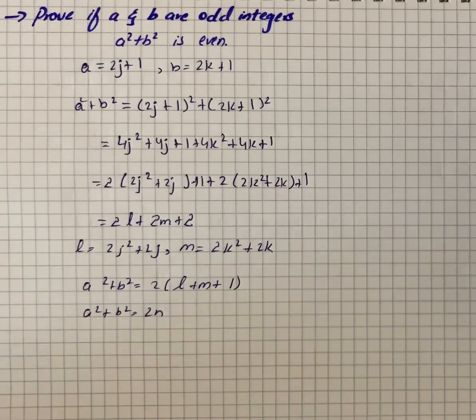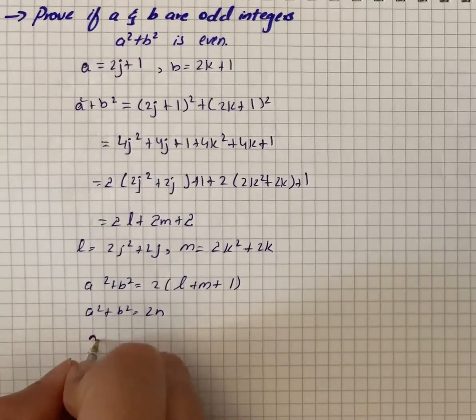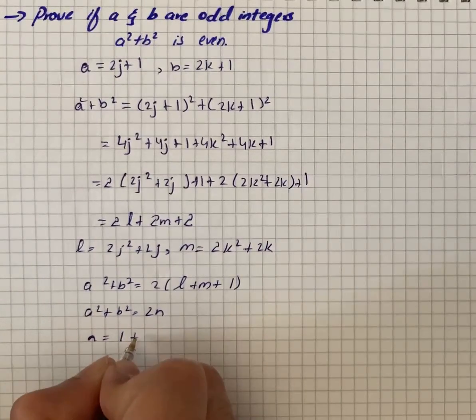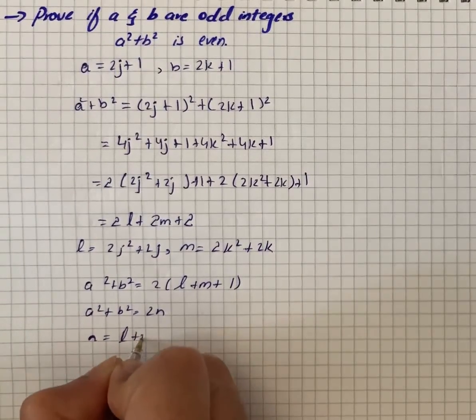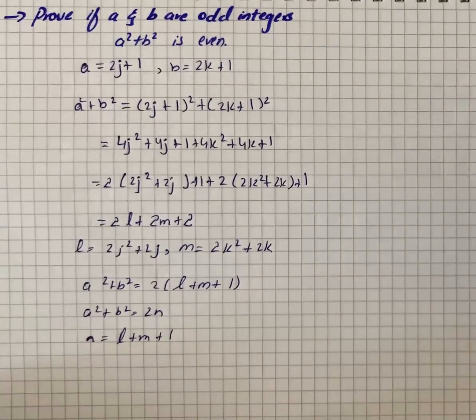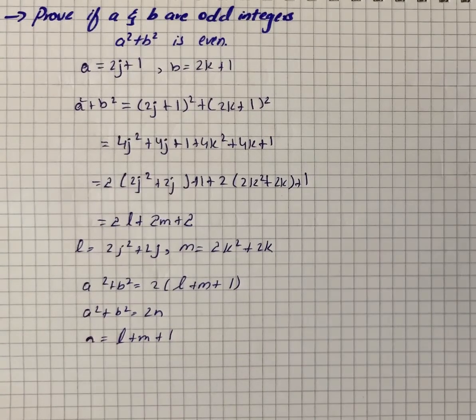If n = l + m + 1 is also an integer, so if a and b are any odd integers, then a² + b² is even.